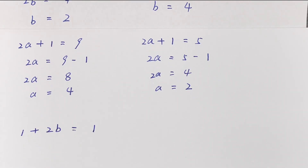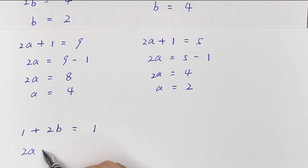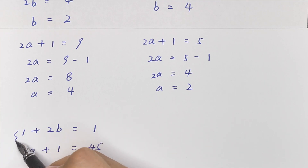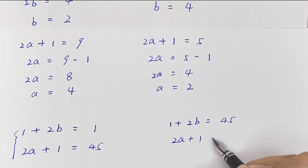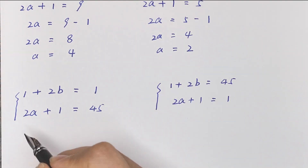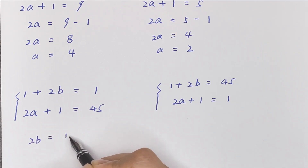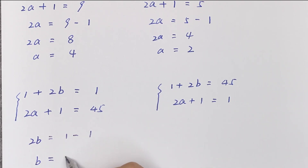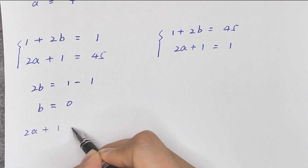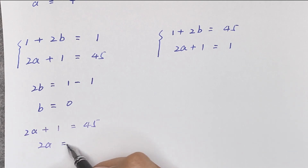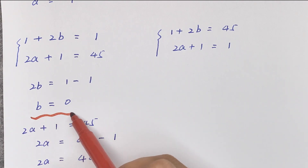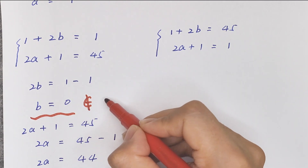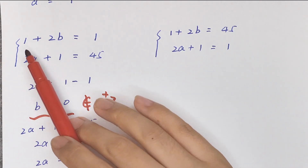For the case 1 + 2b = 1 and 2a + 1 = 45: 2b = 0, so b = 0. But 0 is not a positive integer, so this case is invalid.